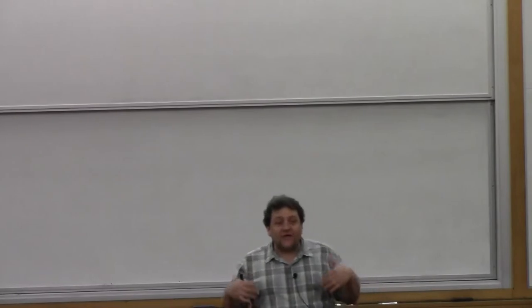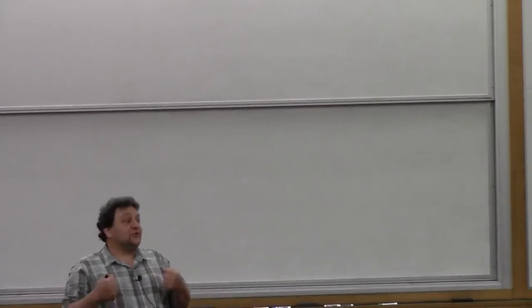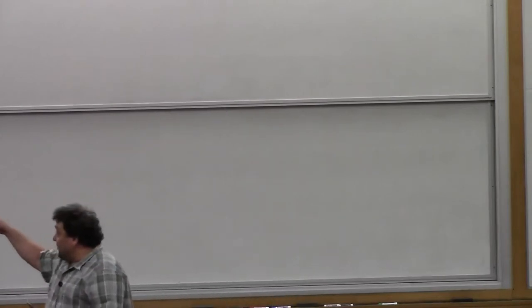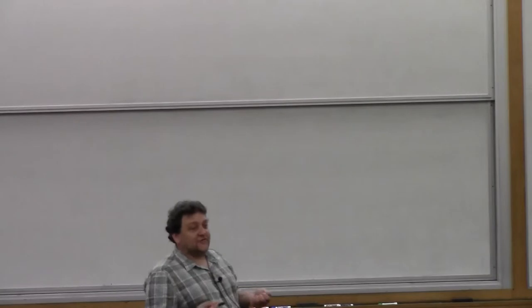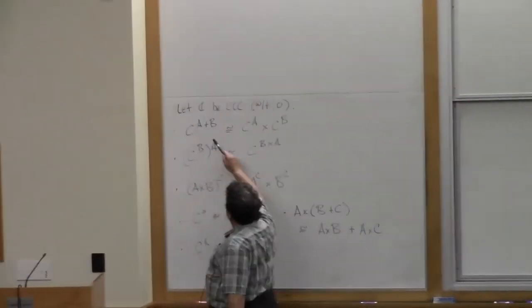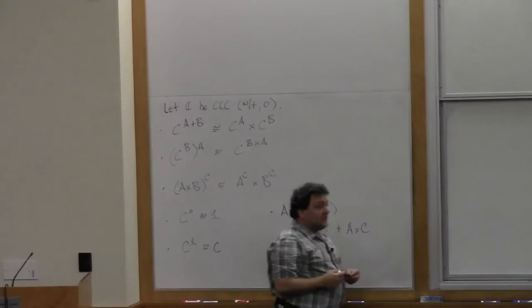And then, because they both satisfy the same universal mapping property, they must be isomorphic. You show that they both have it in virtue of being compounded out of binary products in two different ways. So the universal mapping property was just being a ternary product. If you take a binary one and associate this way, you get a ternary one. Or a binary one over here and associate that way, you get a ternary one.